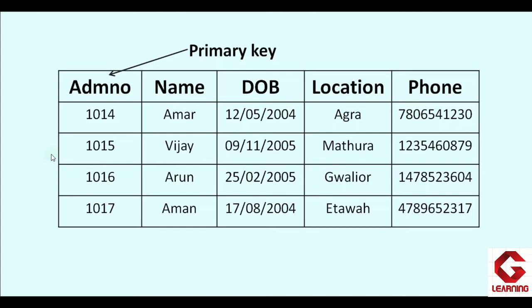Admission number, however, is unique for each student in a school — it is never repeated. So the admission number column satisfies the first condition. Second, whenever we record a new student, we must provide their admission number — we cannot leave it blank. So because admission number will not contain duplicate values and will not be left blank, it is set as the primary key. It is mandatory that when creating a table in RDBMS, one column or a combination of columns must be defined as the primary key.